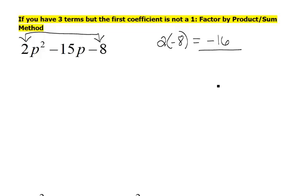Now, we're going to find all of our factors of negative 16, which would be what? 1 and 16, 2 and 8, 4 and 4.